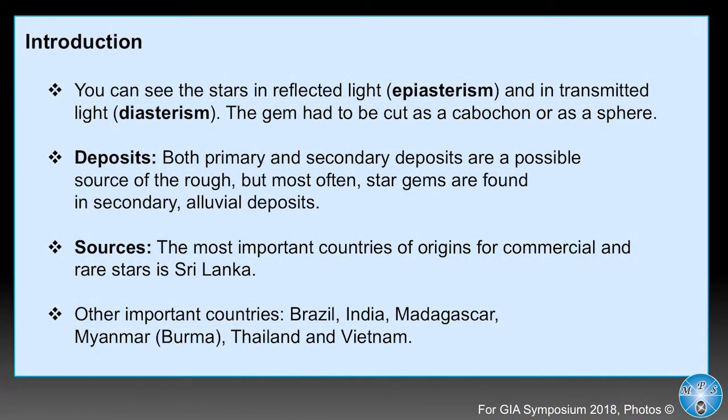In epi-asterism, the light must come at a right angle of 90 degrees on the surface of the stone. In diasterism, the light goes through the stone. The deposits are mostly secondary alluvial deposits, but primary deposits are also possible. The most important source is Sri Lanka — the island of stars — which has all the rare stars, all the common stars, and the most beautiful blue stars. Other important countries include Brazil, India, Madagascar, Burma, Thailand, and Vietnam.